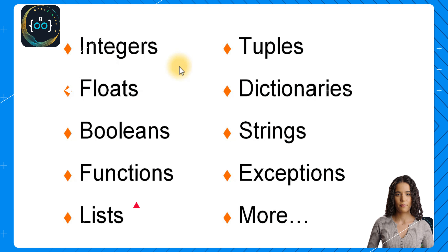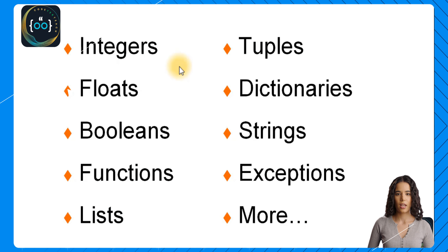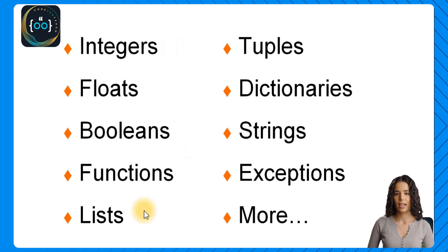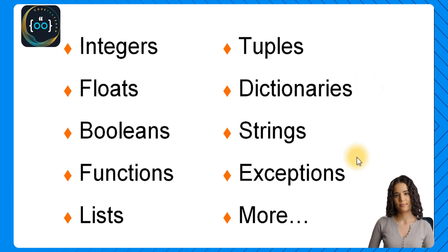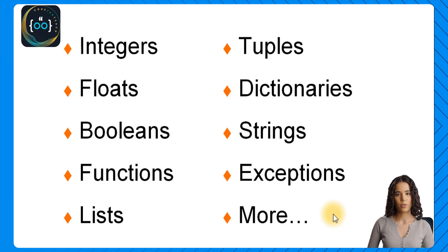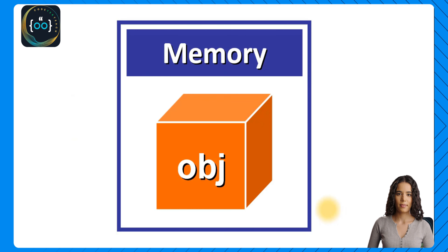As you saw in the previous examples, basically everything in Python is an object, including integers, floats, booleans, functions, lists, tuples, dictionaries, strings, exceptions, and any other element that you can use in your code. So let's see how they work.